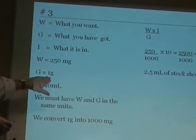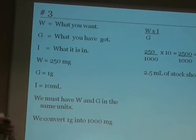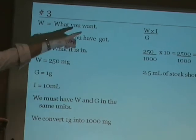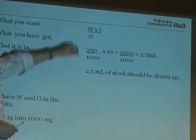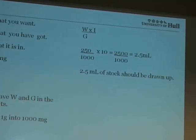So we convert the grams to milligrams. 1g is 1000mg. Substituting in our formula again, want is 250, got is 1000, and in is 10.